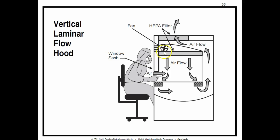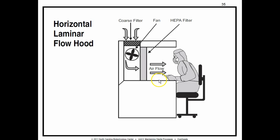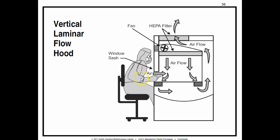Vertical laminar hoods are a little more complicated. Notice there is a sash in front — this is intended to protect the worker and not so much the material, though you still want to protect the material. HEPA filters are at the top, so air is filtered before it comes back down. It flows down vertically behind the sash and through filters, with air drawn in underneath the sash where the person is working. You need to know the big differences between both horizontal and vertical laminar hoods — it is very important for your test.